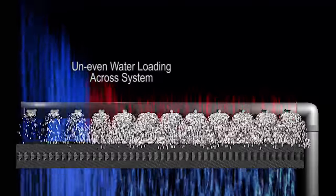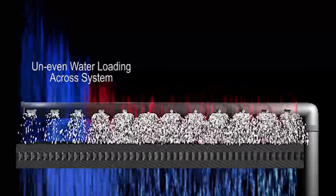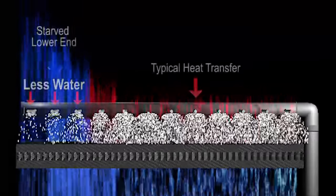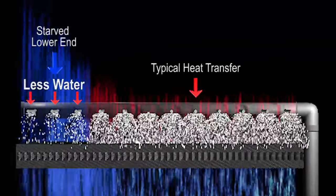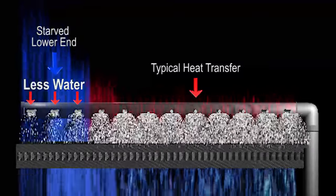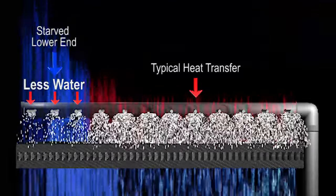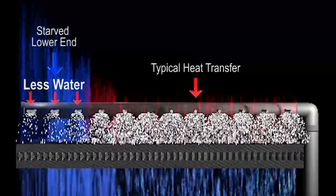The result is uneven water loading across the system, often starving the lower end of the distribution system of water. This results in a waste of both fan and pump energy. In effect, the velocity pressure competes with the static pressure at the nozzle, resulting in the system not becoming fully charged. The net result of this is that no two nozzles receive equal water loading.